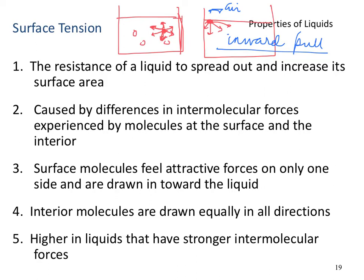Surface tension is caused by differences in intermolecular forces experienced at the surface versus in the interior bulk. Surface molecules feel an overall inward attraction, because of which the surface area is essentially minimized.